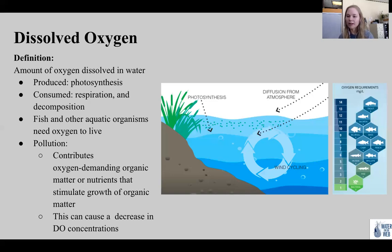On the right, we can see the oxygen requirements in milligrams per liter. A trout requires seven milligrams per liter of oxygen, whereas a walleye only requires five milligrams per liter of dissolved oxygen.